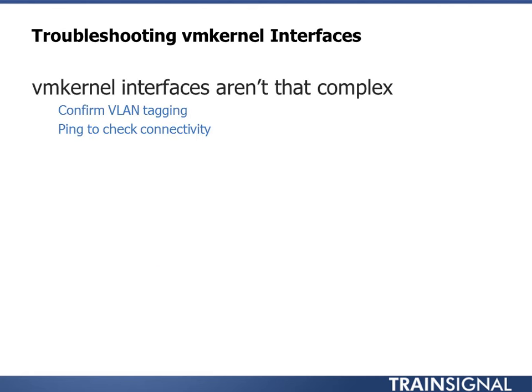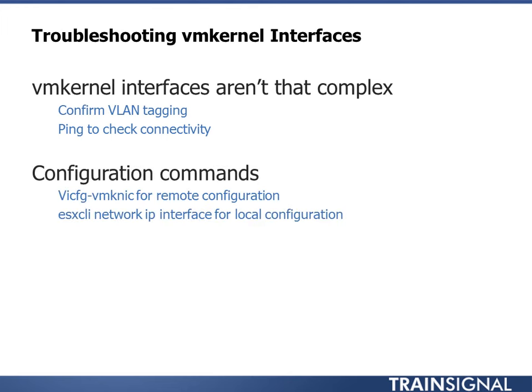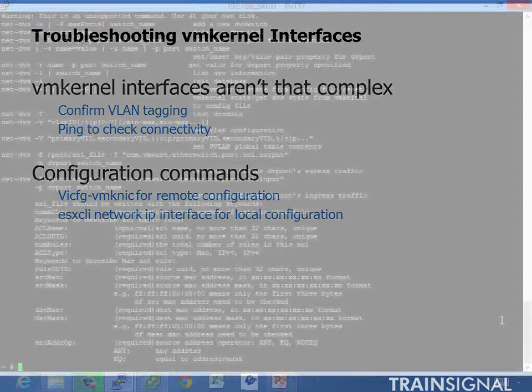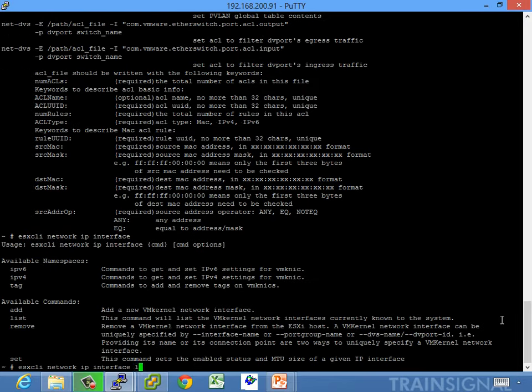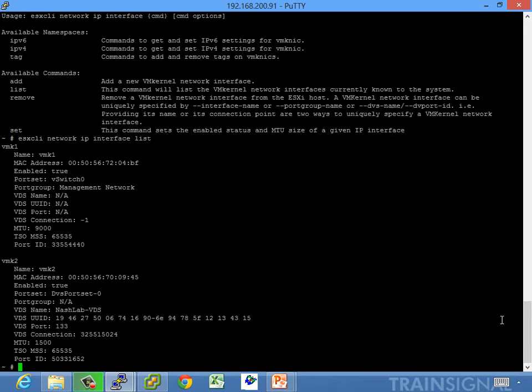VM kernel interfaces aren't that complex. All you need to do is confirm VLAN tagging and ping to check connectivity. A couple of commands: you've got vi-config vmk-nic and ESX-CLI network IP interface for local configuration. You can do that as well as remotely from the VMA — a lot of people still use the vi-config commands. With ESX-CLI network IP interface list it'll show our VM kernels — vmk1 and vmk2.